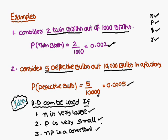From these examples you can remember that the Poisson distribution is used for rare events. For example, if out of one thousand births only two are twins, that is a rare event. Similarly, if out of one thousand birds two are blind, that is also a rare event. In such cases, the Poisson distribution gives an approximate value.